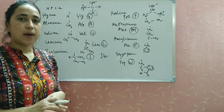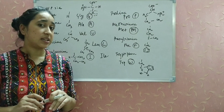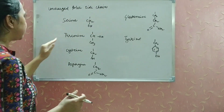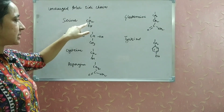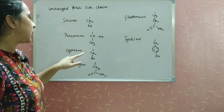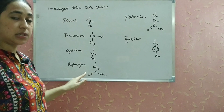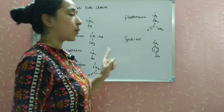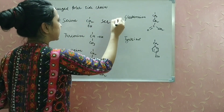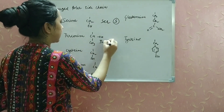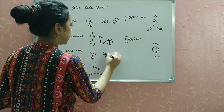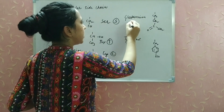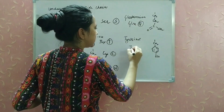Amino acids with polar uncharged side chains are: serine (Ser, S) with R group CH2OH; threonine (Thr, T) with CHOH-CH3; cysteine (Cys, C) with CH2SH; asparagine (Asn, N) with CH2-CONH2; glutamine (Gln, Q) with CH2-CH2-CONH2; and tyrosine (Tyr, Y) with CH2-benzene-OH.